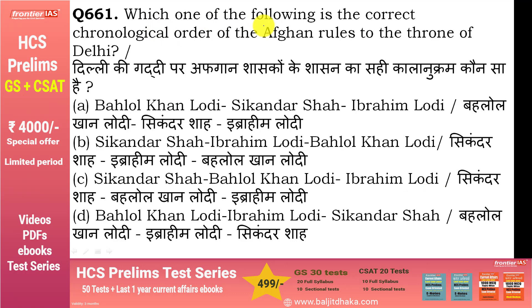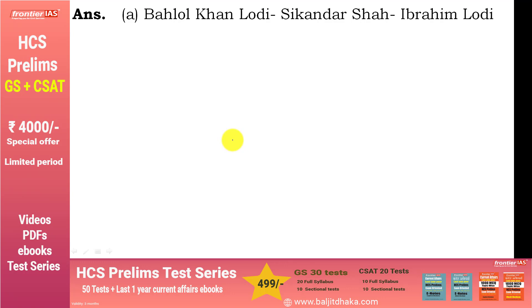Which is the correct chronological order of Afghan rulers to the throne of Delhi? Option A सही है: बहलोल खान लोदी, सिकंदर शाह, इब्राहिम लोदी. बहलोल खान लोदी ने dynasty found की थी, बाद में सिकंदर लोदी main ruler हुए, और इब्राहिम लोदी final ruler थे जिन्हें Babur ने first battle of Panipat 1526 में हराया था.